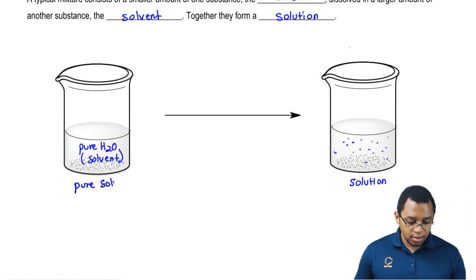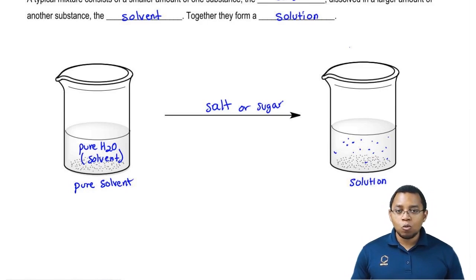This is our pure solvent. We throw in some salt or sugar. The solvent dissolves it and together they form our solution. These are the terms that we need to be aware of.